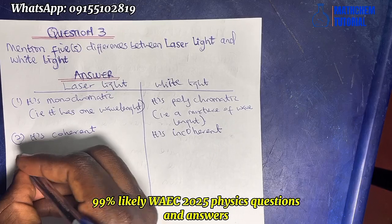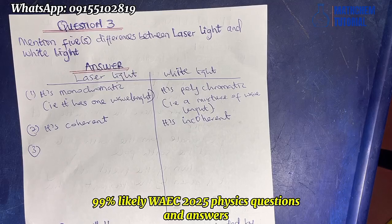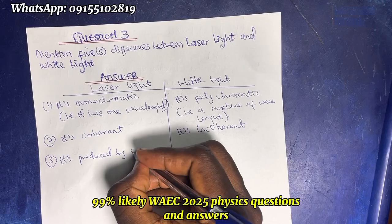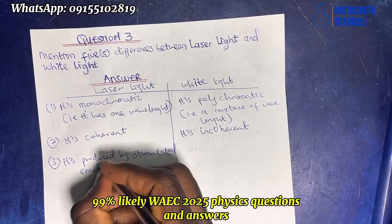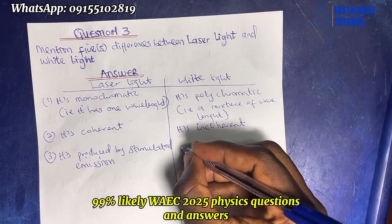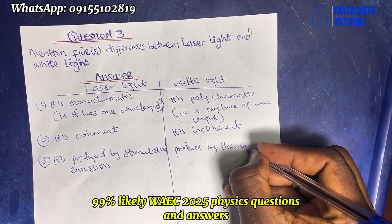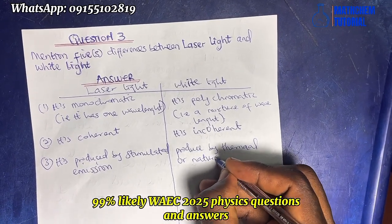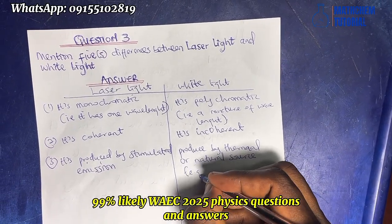Number three: laser light is produced by stimulated emission. White light is produced by thermal or natural sources, such as sunlight.